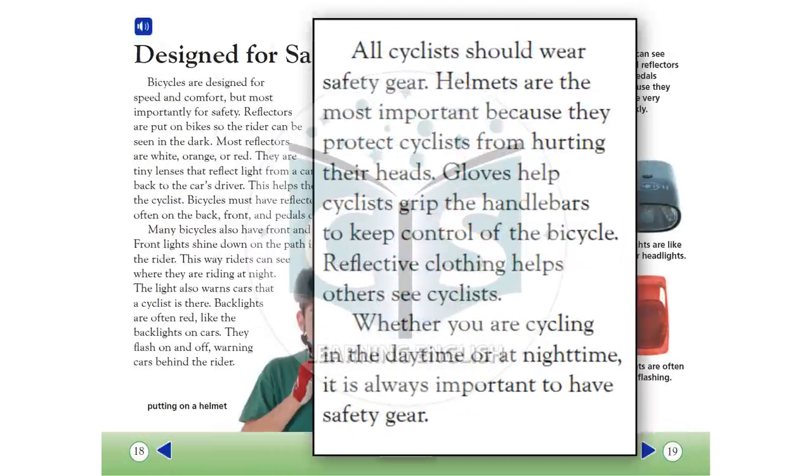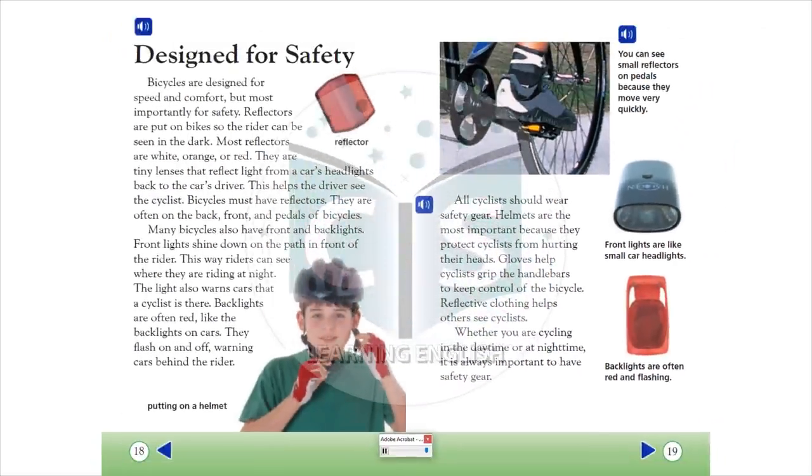All cyclists should wear safety gear. Helmets are the most important because they protect cyclists from hurting their heads. Gloves help cyclists grip the handlebars to keep control of the bicycle. Reflective clothing helps others see cyclists. Whether you are cycling in the daytime or at nighttime, it is always important to have safety gear. You can see small reflectors on pedals because they move very quickly. Front lights are like small car headlights. Back lights are often red and flashing.